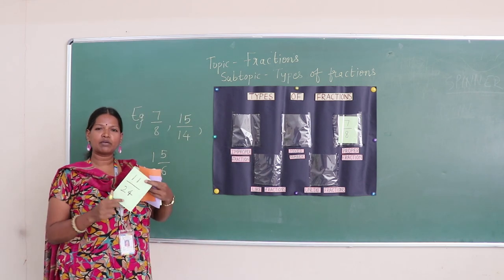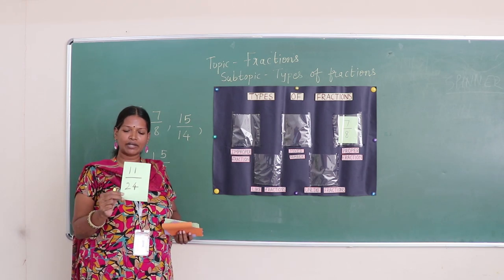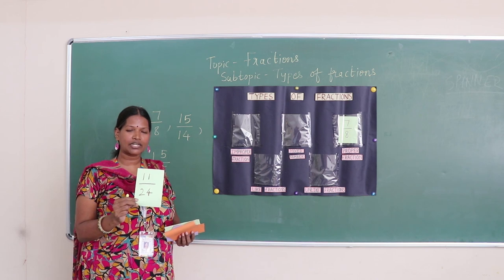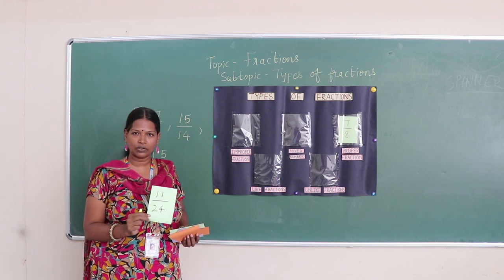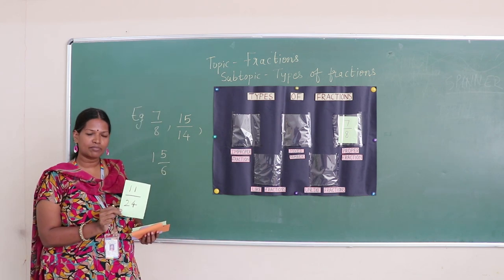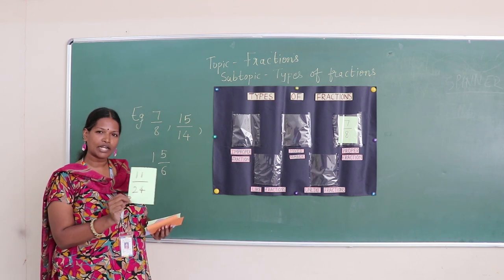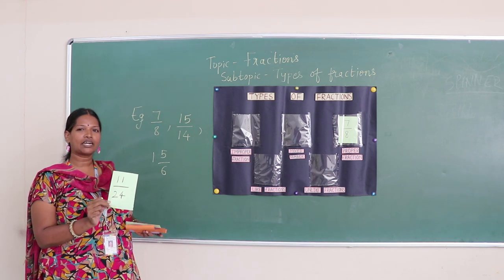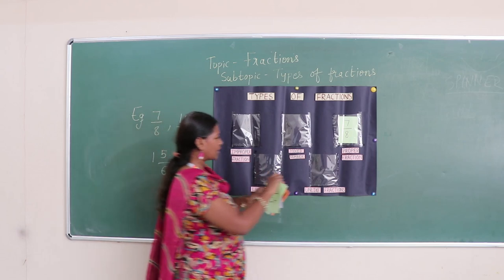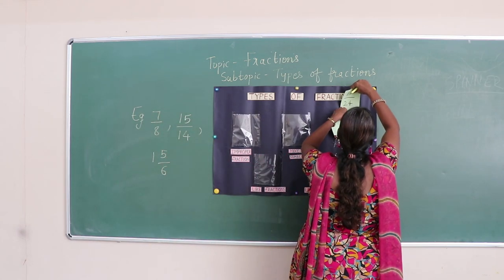Now the next card: 11 upon 24. The numerator is 11 and the denominator is 24. Since 11 is again a smaller number than the denominator, this is again a proper fraction. So I can put this also in the pocket of proper fractions.